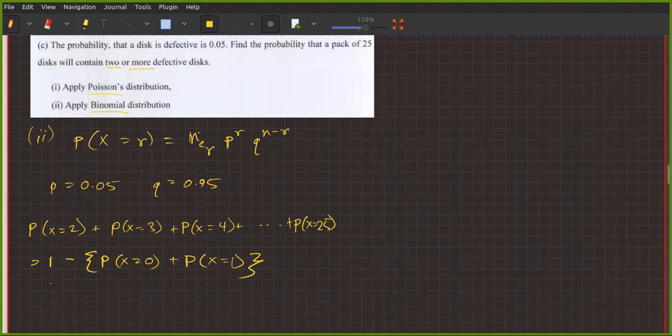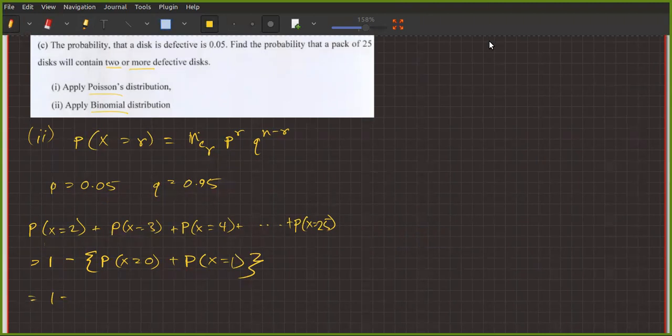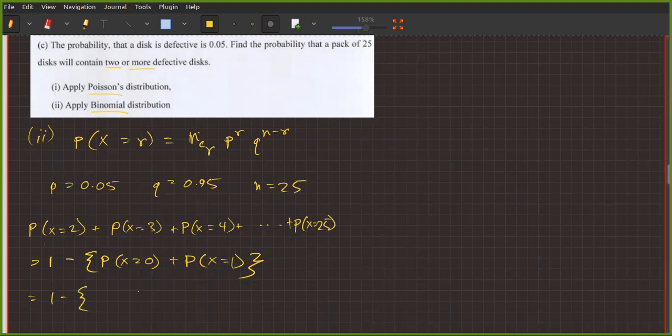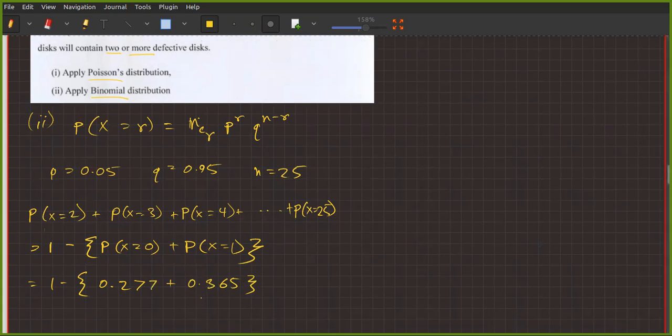So P(X=0) with n=25 and P(X=1). Actually I get 0.277 and 0.365. So the calculation gives 0.358.